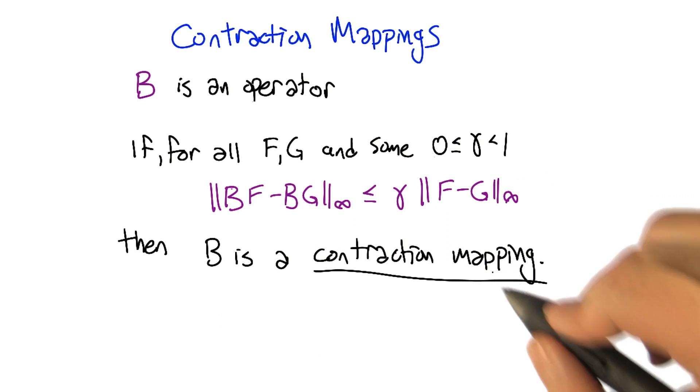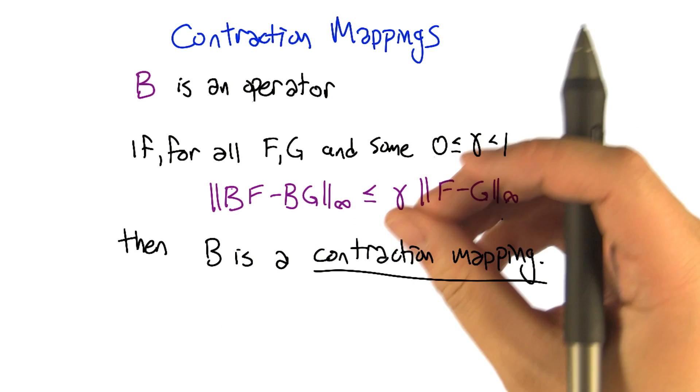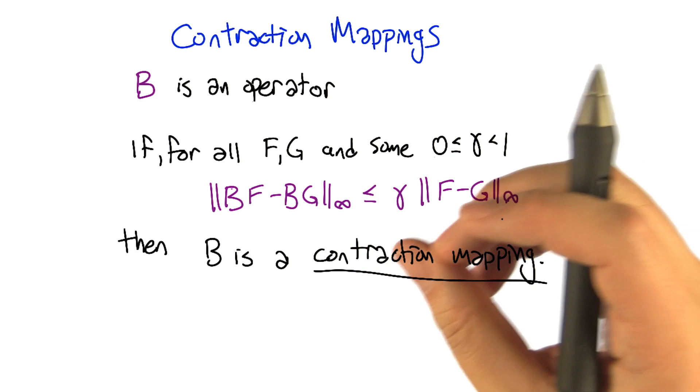Then we say that B is a contraction mapping, that it's causing things to get closer together, tighter together.